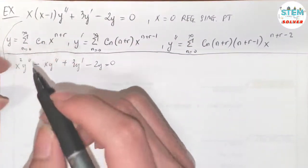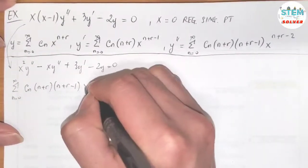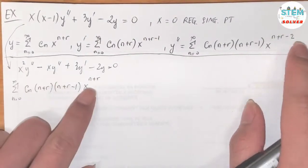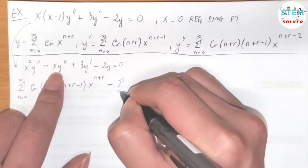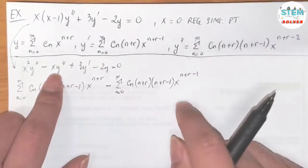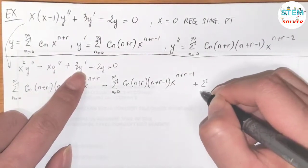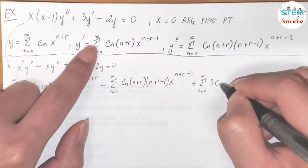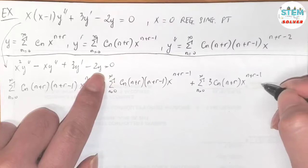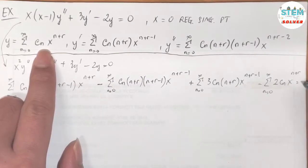Now we plug in the power series. The first term gives the series from 0 to infinity of c_n times (n plus r)(n plus r minus 1) times x to the n plus r — multiplied by x squared, adding exponents. Minus the series of c_n(n plus r)(n plus r minus 1) times x to the n plus r minus 1, adding exponents. Plus 3y prime, which is the series of c_n(n plus r minus 1). Minus 2y, which is the series of c_n times x to the n plus r, all equal to 0.